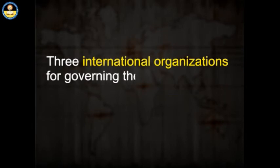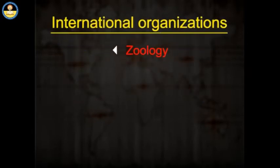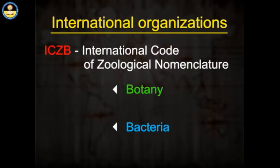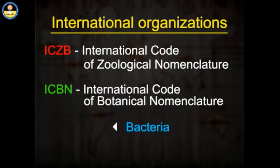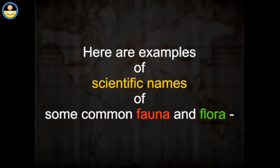There are three international organizations governing the application of rules of nomenclature for scientific names: one for zoology, one for botany, and the third for bacteria. These are the International Code of Zoological Nomenclature, the International Code of Botanical Nomenclature, and the International Code of Nomenclature for Bacteria.